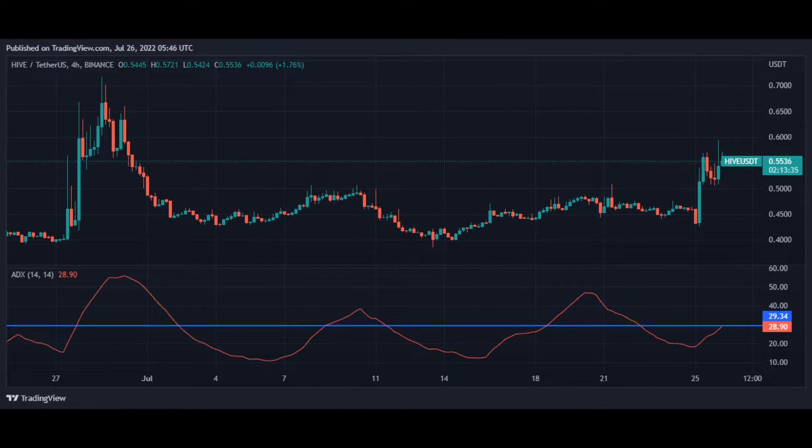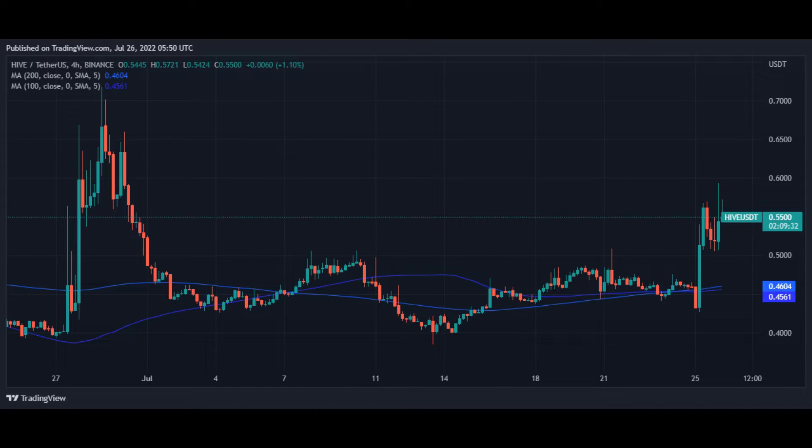The Average Directional Index, ADX, is an indicator that shows the strength of a trend. It ranges from 0 to 100. From the chart of Hive above, it indicates an ADX value of 29.34 which shows that the present bullish run is strong. Hence, the present price of Hive is expected to retain its present bullish run.